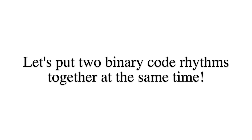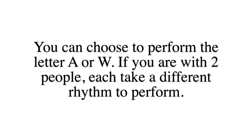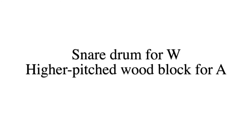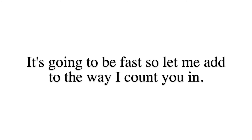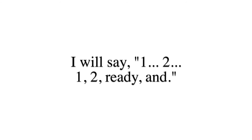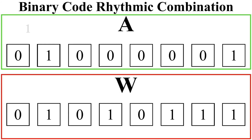Let's put two binary code rhythms together. You can choose the rhythm you would like to perform. If you are with another person, each take a different letter and perform together. I will use two different drum sounds: the snare drum for W, and a higher pitched wood block for the letter A. Let's repeat each rhythm four times — it's going to be fast. So let me add to the way I count you in: 1, 2, 1, 2, ready, and.